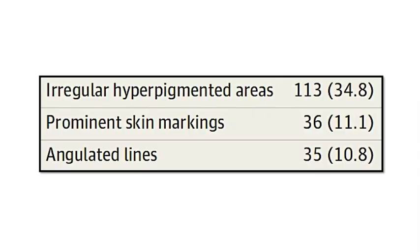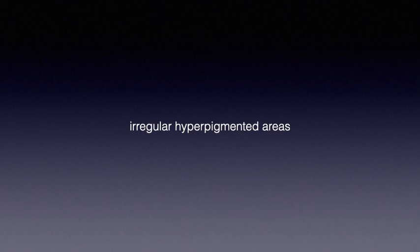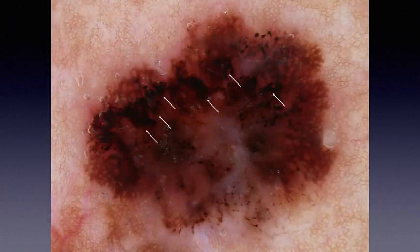And then we come to the three new structures that were described and validated in this study: irregular hyperpigmented areas, prominent skin markings, and angulated lines. Here you can see a characteristic example of each one of them. I will explain them more analytically one by one, starting with the most frequent and maybe the most important from a diagnostic perspective — which are these small, hyperpigmented, almost black areas of irregular shape.